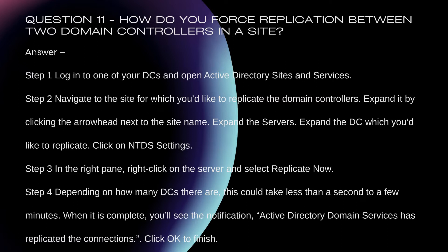Step 3: Expand it by clicking the arrowhead next to the site name, expand the servers, expand the DC which you'd like to replicate, click on NTDS Settings. Step 4: In the right pane, right-click on the server and select Replicate Now. Depending on how many DCs there are, this could take less than a second to a few minutes. When complete, you'll see the notification: 'Active Directory Domain Services has replicated the connections.' Click OK to finish.